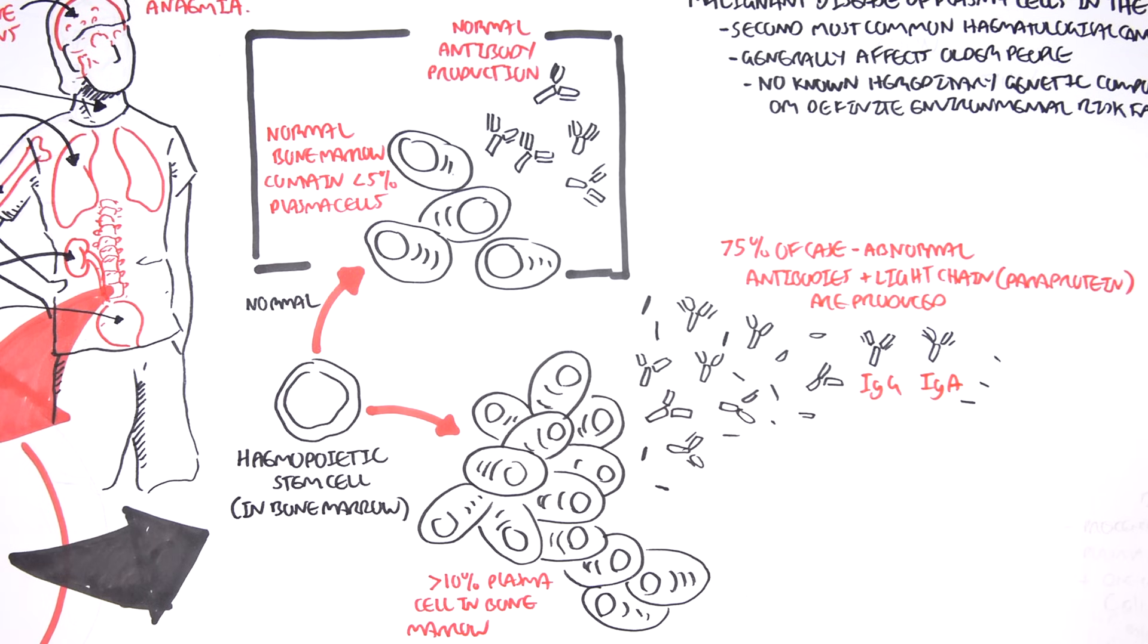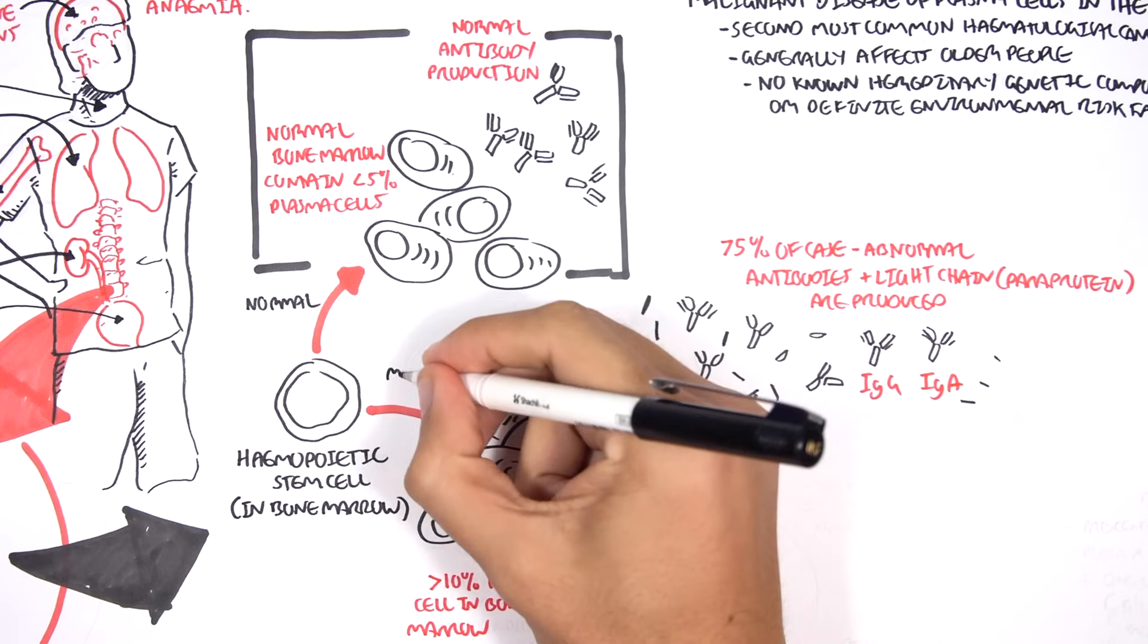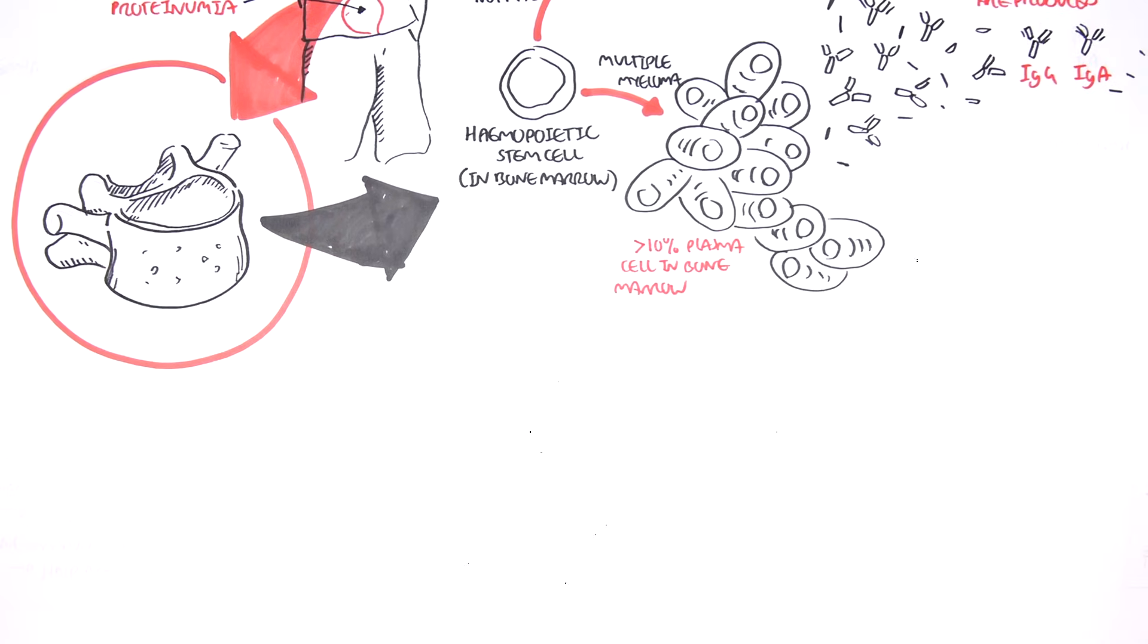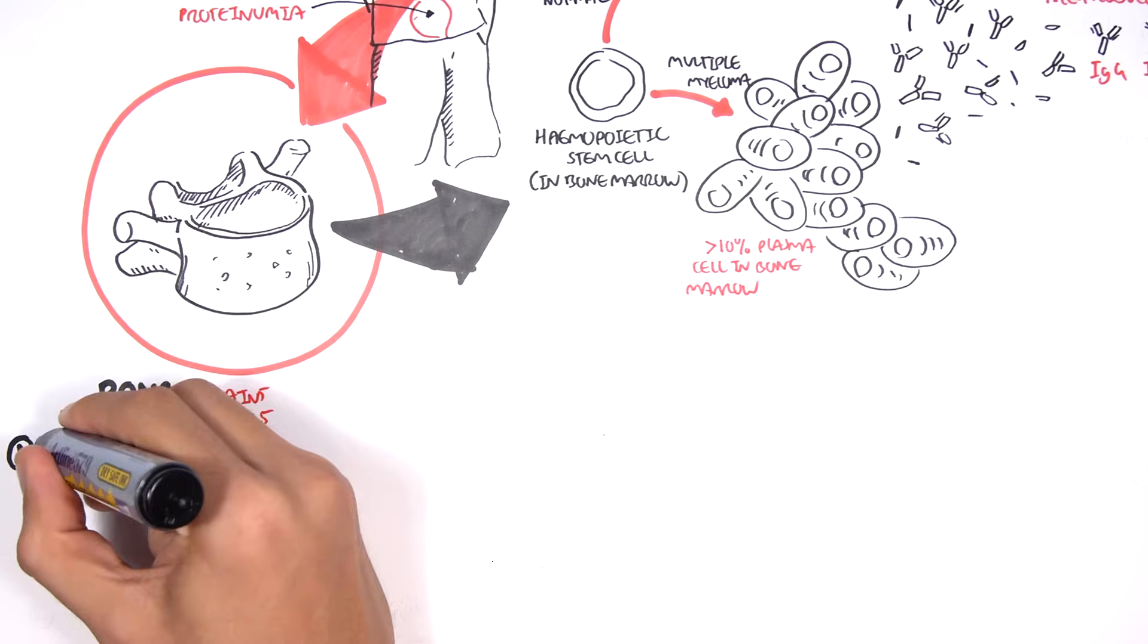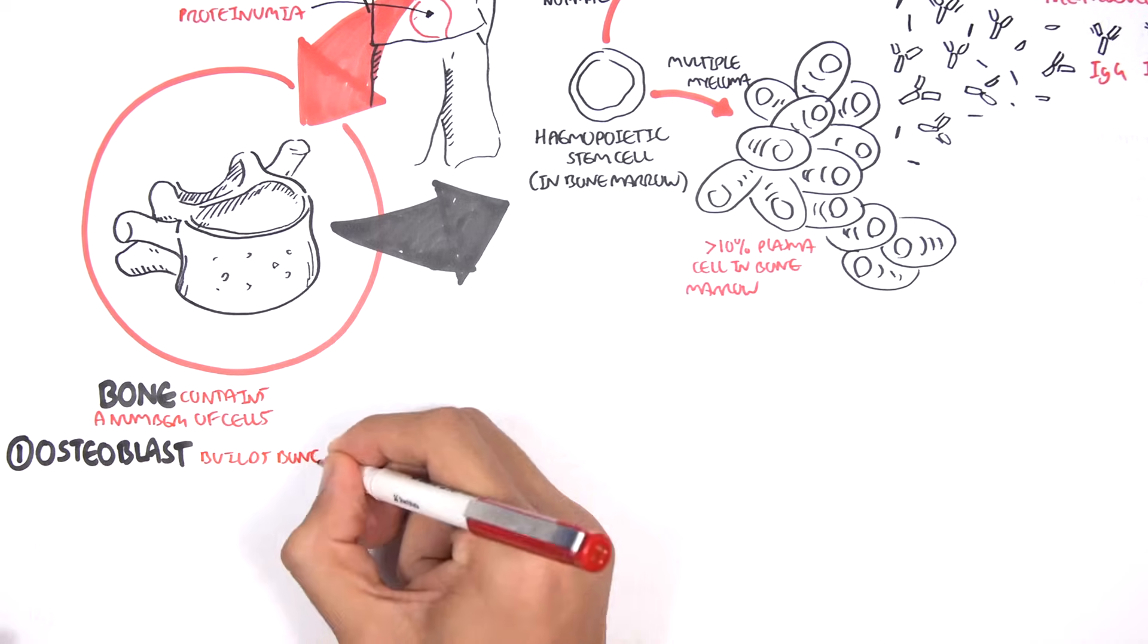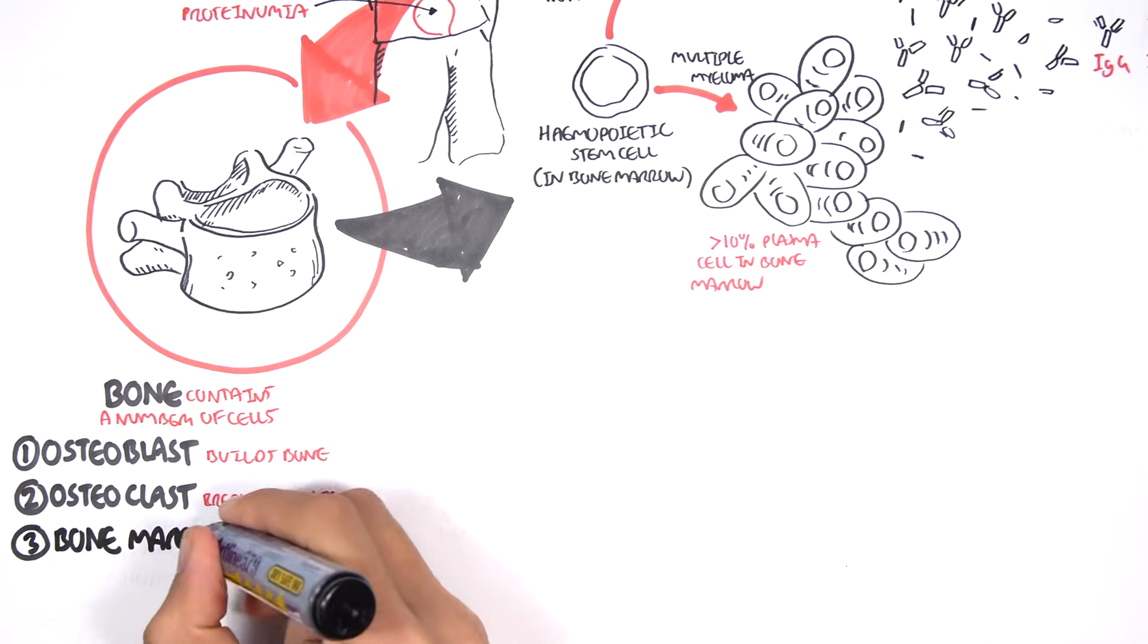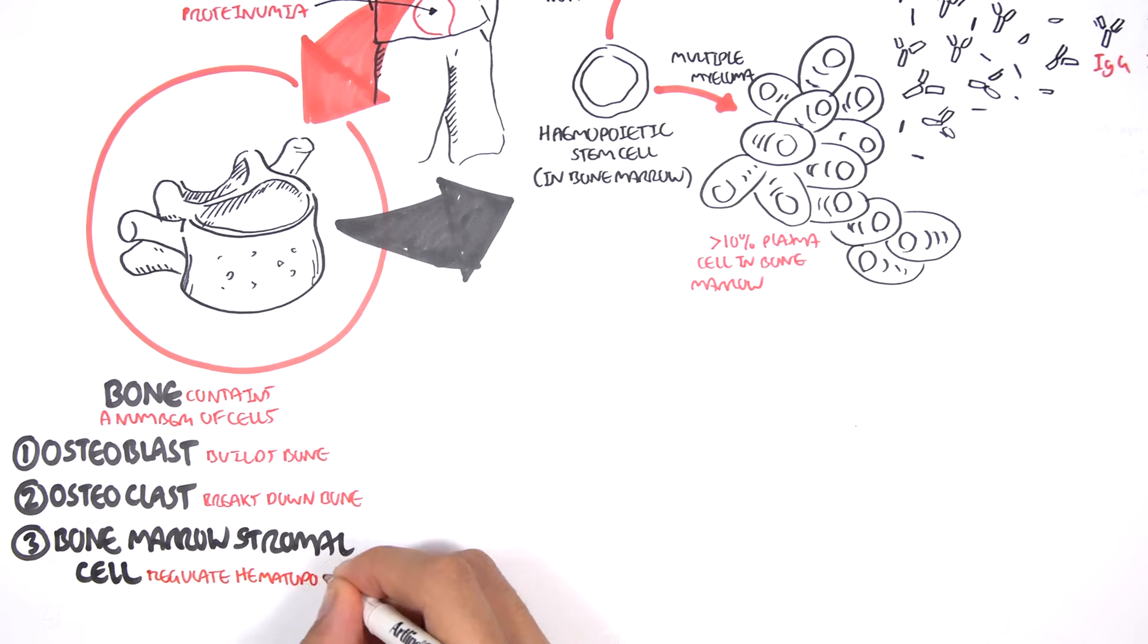The main antibodies produced or that are found associated with multiple myeloma are high amounts of IgG and IgA. Let us now look at the pathophysiology and the interaction that occurs between these abnormally high amounts of plasma cells with other cells in the bone. We need to recap some cells found in the bone and bone marrow. The bone contains a number of cells. Osteoblasts are cells that build bone. Osteoclasts are cells that break down bone. And then we have things called bone marrow stromal cells which regulate hematopoiesis.